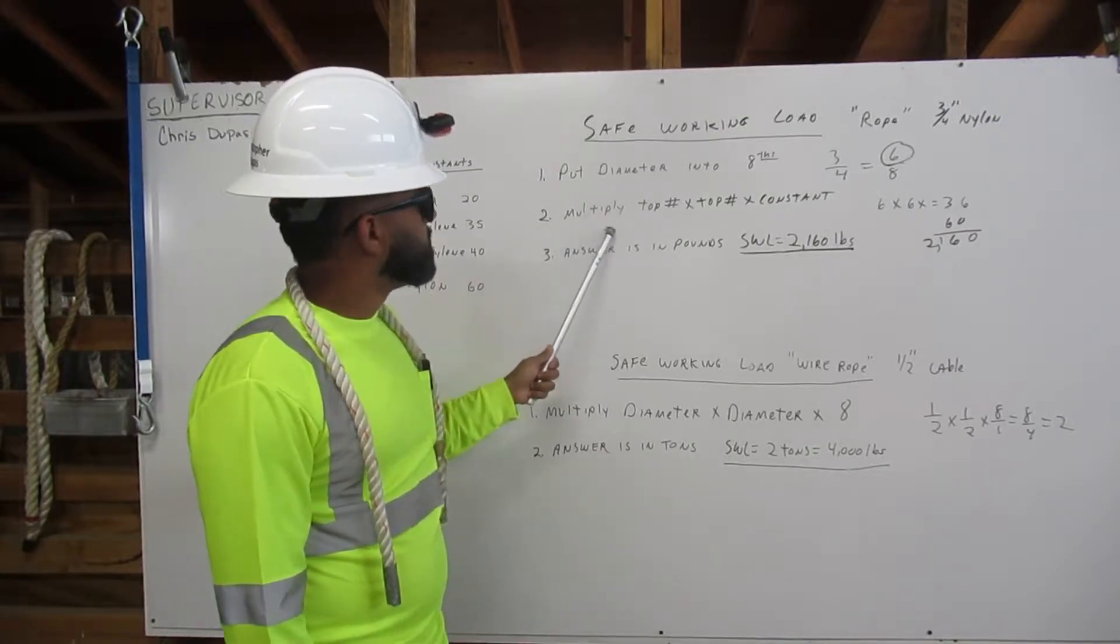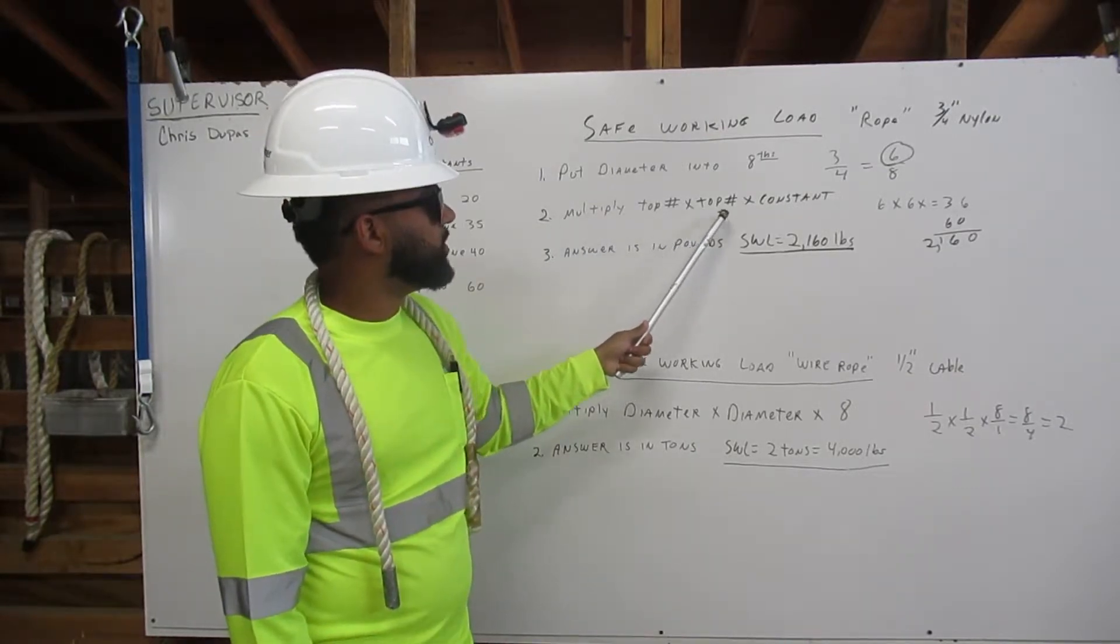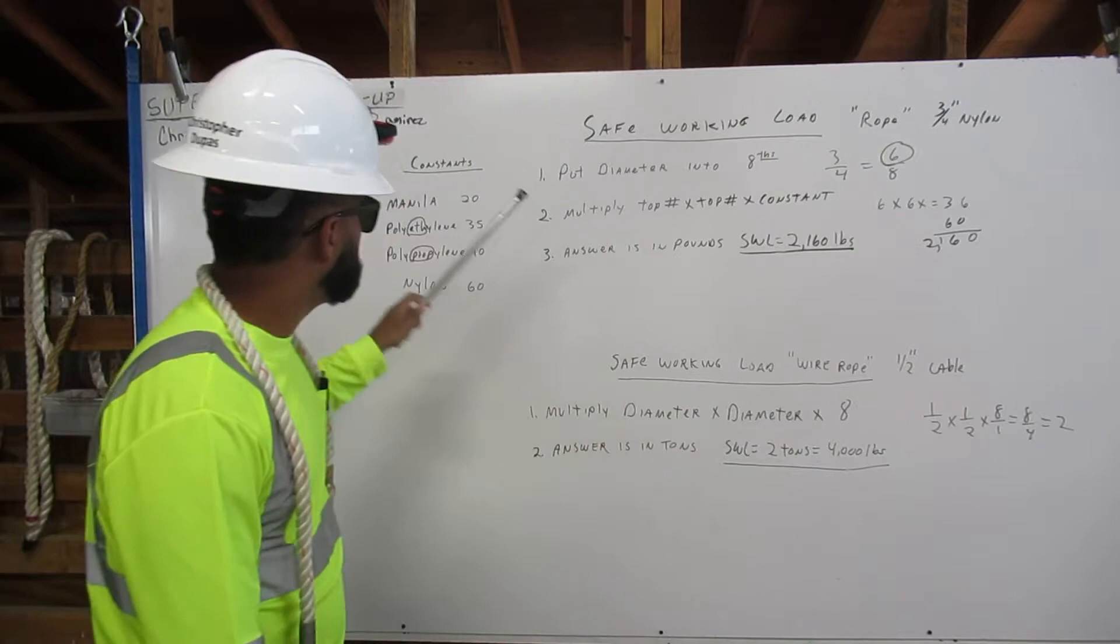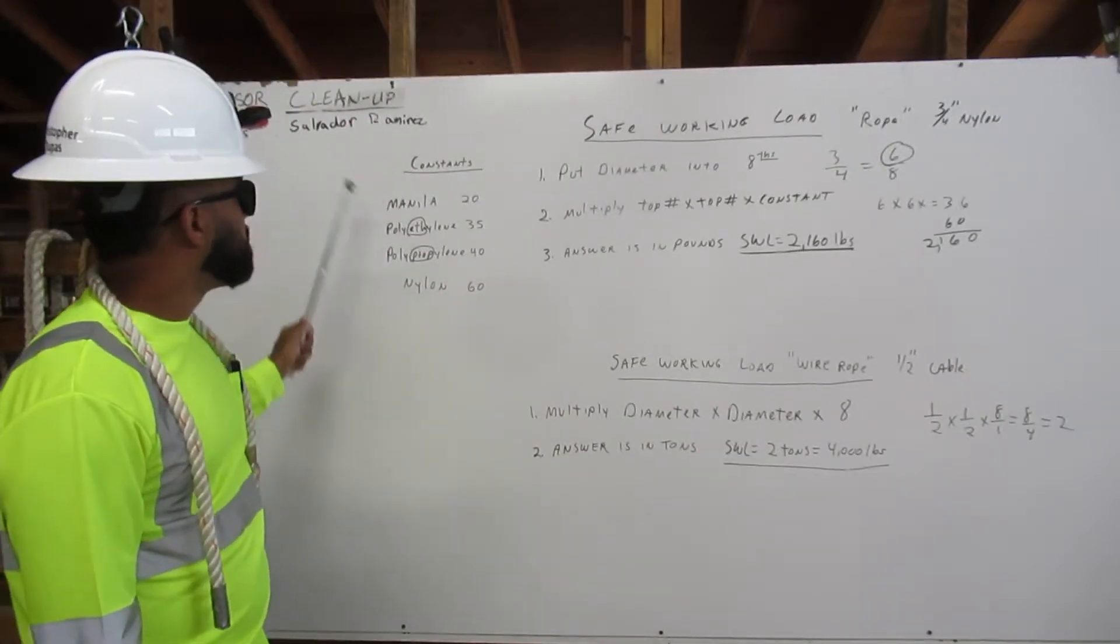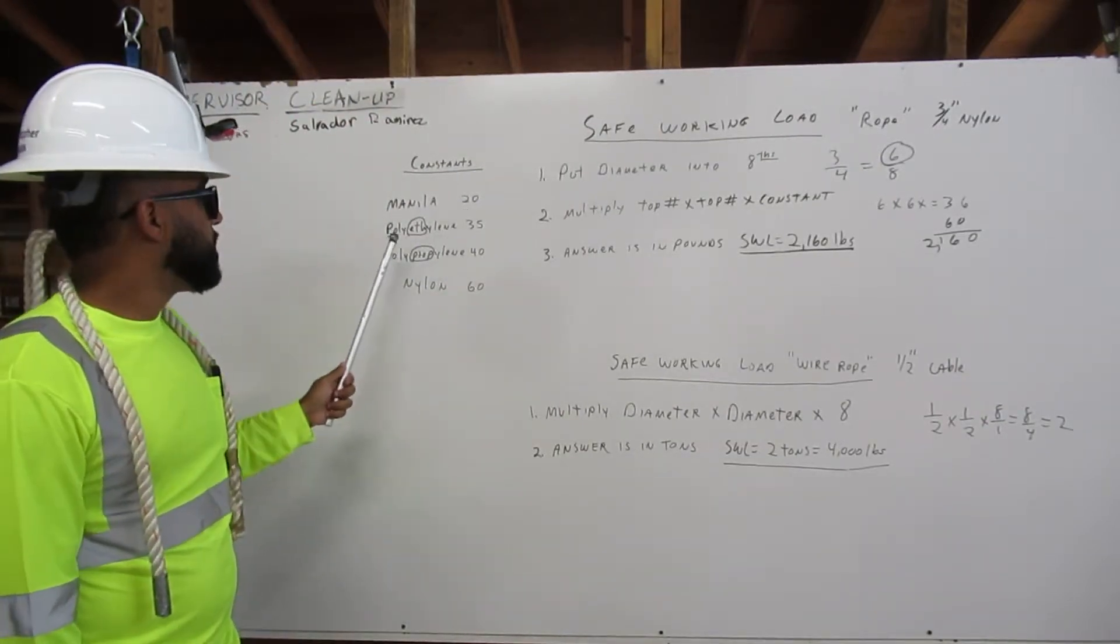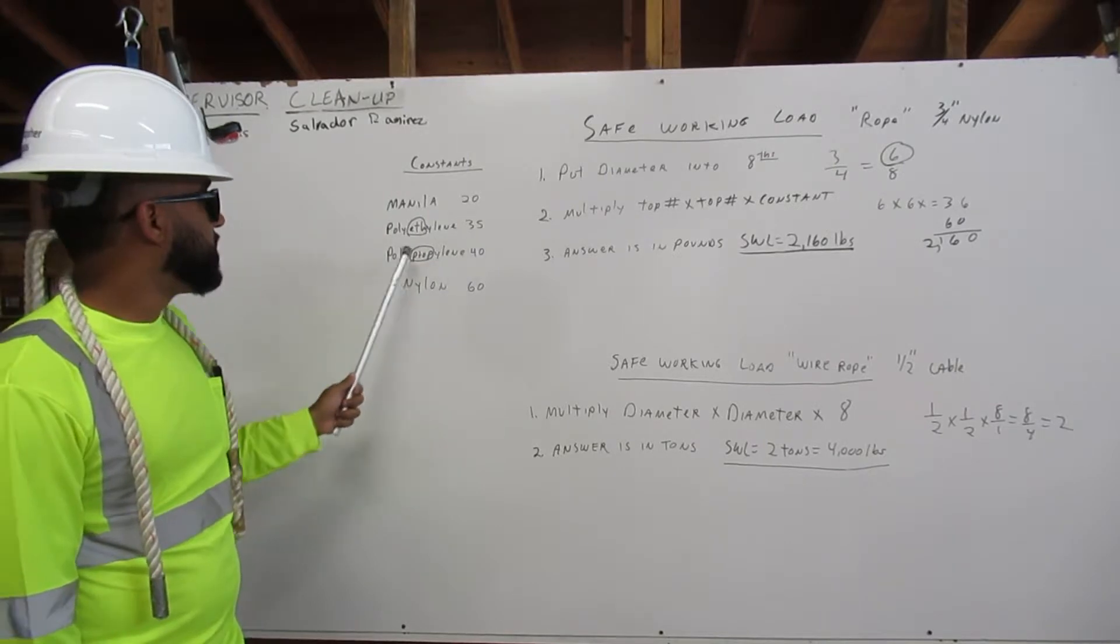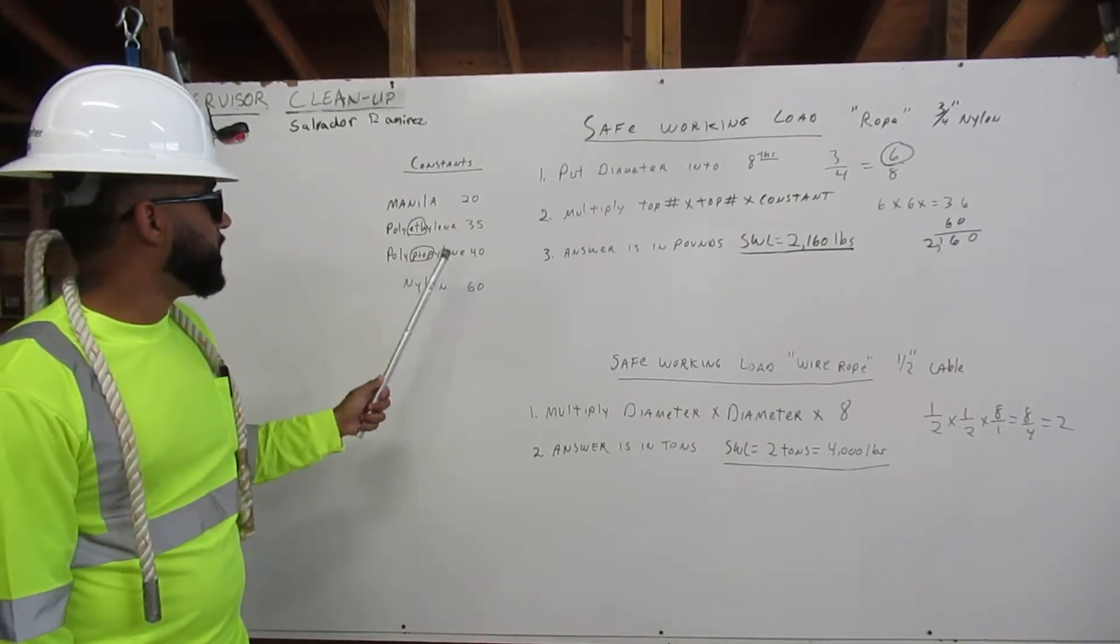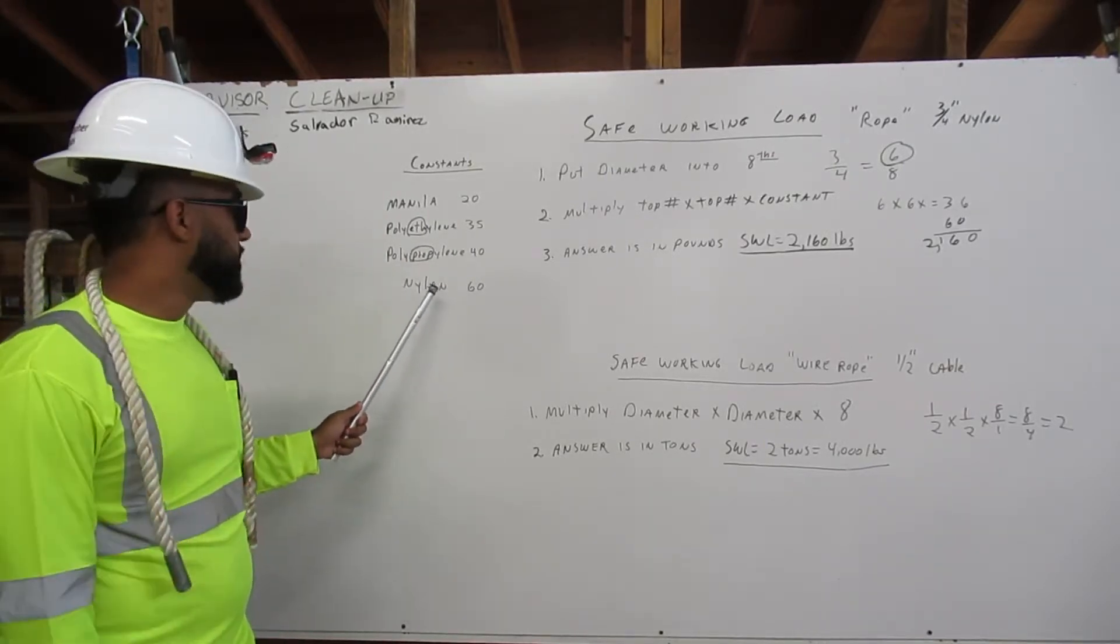Two, multiply top number times top number times constant. These are constants. Manila, 20. Polyethylene, 35. Polypropylene, 40. Nylon, which is what we're using, 60.